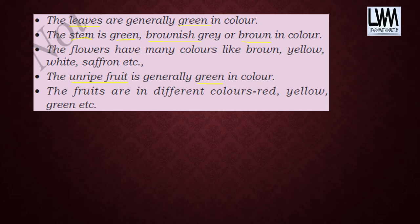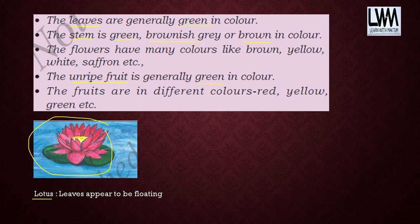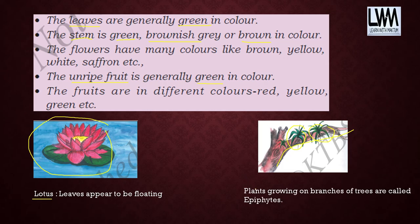Here you can see a lotus plant. You will be able to see lotus in water, and its leaves appear to be floating on the water. Also, some plants grow on the branches of trees — these plants are called epiphytes. Plants growing on branches of trees are called epiphytes — you have to remember this.